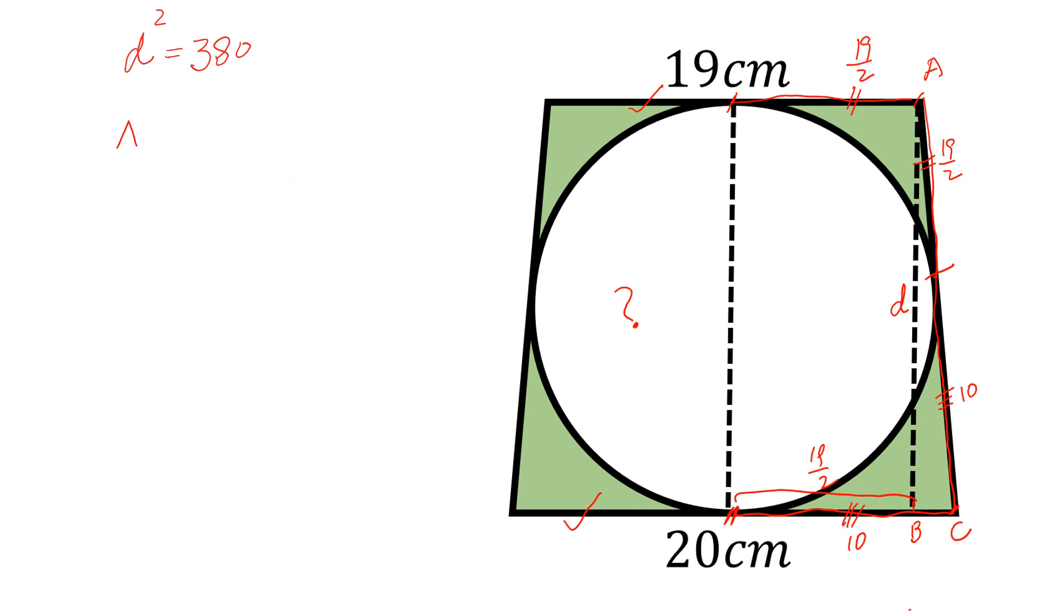Now area of this circle is equal to pi R square and R is equal to half of the diameter square. So pi into D square divided by 4 and D square is equal to 380 divided by 4 and 4 into 95. So the area is equal to 95 pi centimeter square and this is the required answer.